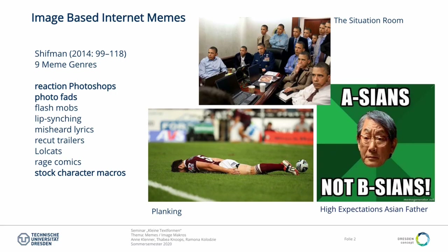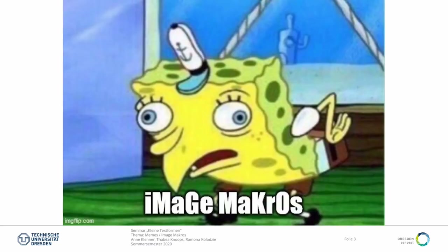Reaction-Photoshops sind Bilder, die als Reaktion auf ein bekanntes Foto entstehen, wie hier der Situation Room – hier werden soziale und politische Themen angesprochen. Photofets sind Inszenierungen, das heißt Individuen posieren auf bestimmte Art und Weise und andere machen das nach, hier das Beispiel Planking – quasi eine Massen-Performance. Stock-Character-Macros sind Bilder mit Text, die meist Stereotyp-Verhaltensweisen darstellen und damit auf politische und soziale Themen eingehen. Diese Makros werden uns weiter interessieren, jedoch sagt die Internet-Community nicht Stock-Character-Macros, sondern Image-Macros, einfach weil es nicht nur Stock-Characters betrifft.